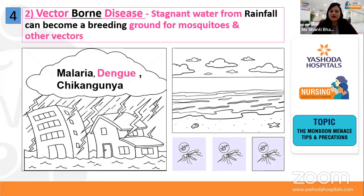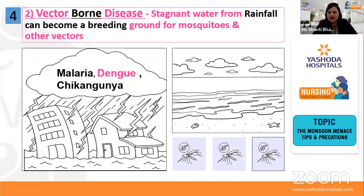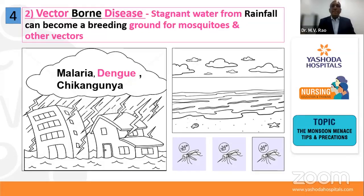When talking about vector-borne diseases, vectors breed very well in a wet atmosphere, leading to admissions related to malaria, dengue, and chikungunya. What are the primary mosquito-borne diseases prevalent during monsoon? We are already getting a lot of dengue cases coming to our hospital — some in outpatients, some requiring hospitalization. Vector-borne diseases are very common during monsoon due to mosquito breeding. The most common are dengue, malaria, and chikungunya; these mosquitoes can also cause encephalitis.